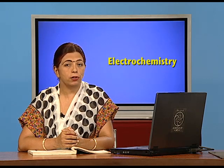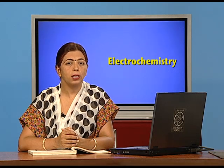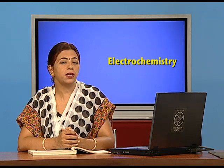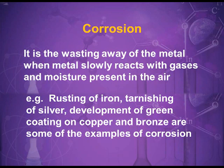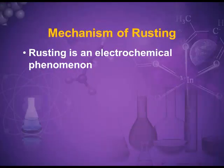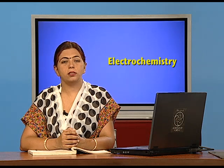Bridges and machinery are all made up of iron, and the rusting of iron causes enormous damage. Corrosion is defined as the wasting away of metal when the metal reacts with atmospheric gases, forming an oxide layer or salts on the metal surface. Rusting is corrosion, but every corrosion is not rusting. It is an electrochemical phenomenon.